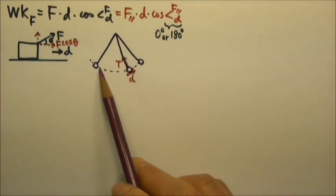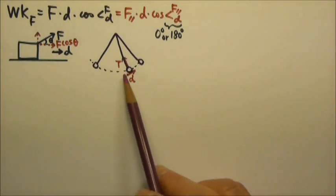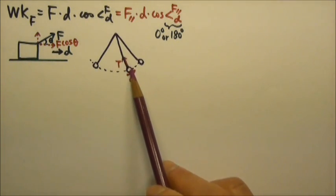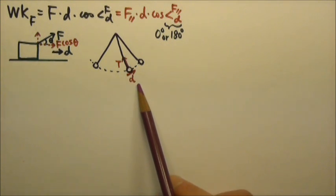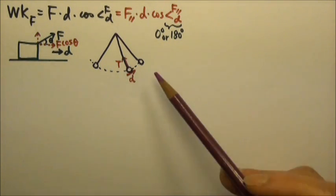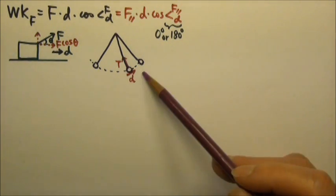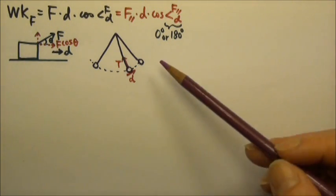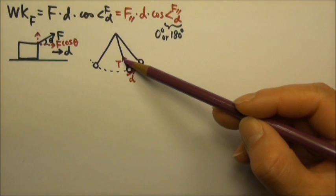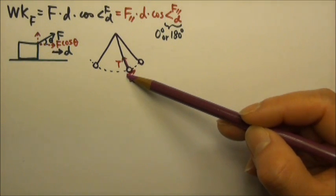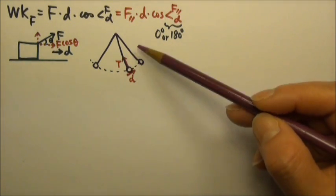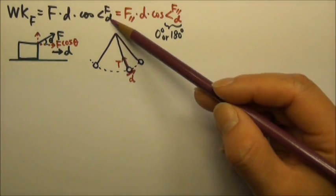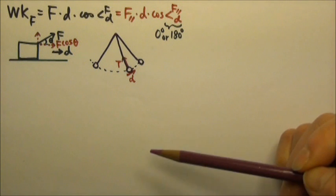For a swinging pendulum, the tension in the string does no work on the pendulum bob because at any moment during the swing, the tension is perpendicular to the displacement, and cosine of 90 degrees is zero.